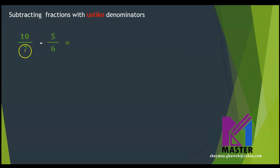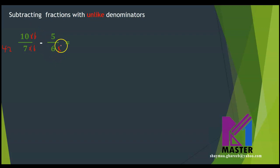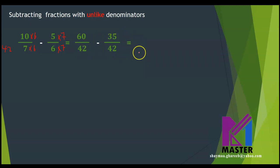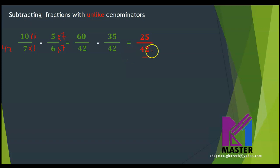Let's try more examples. 10 over 7 minus 5 over 6. The common multiple between 7 and 6 is 42. I will multiply the first fraction by 6 up and down, and the second fraction by 7 up and down. The new fractions will be 60 over 42 minus 35 over 42. 60 minus 35 equals 25, so the answer will be 25 over 42. Can I simplify this fraction? No — this is the simplest form and our final answer.